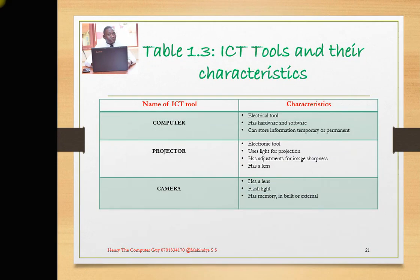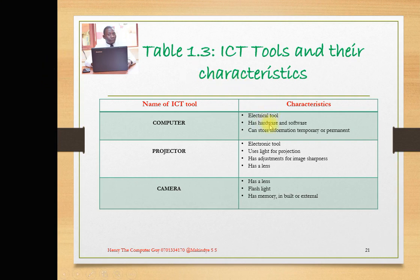Here is the table — I gave you an example of how to go about it. Let's begin with a computer. A computer uses electricity, so it is an electronic tool. It has both hardware and software. The hardware refers to the physical or tangible components such as the mouse and keyboard. The software refers to the programs that run on the hardware and tell the computer what to do.